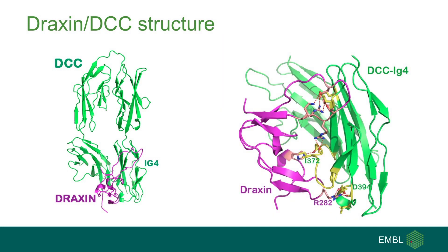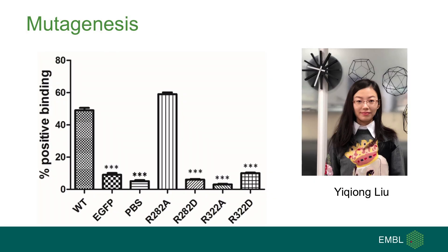The major binding epitope on DCC is the CD loop of IG-like domain 4, as can be seen in this detailed interface interaction. We used COS cells transfected with DCC to test binding to Draxin and mutants, and could confirm that the interface between Draxin-C and DCC is relevant for Draxin binding to DCC.